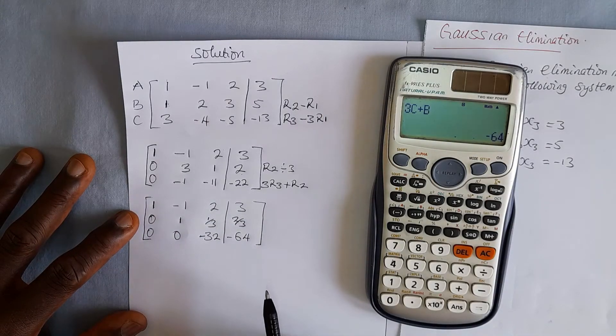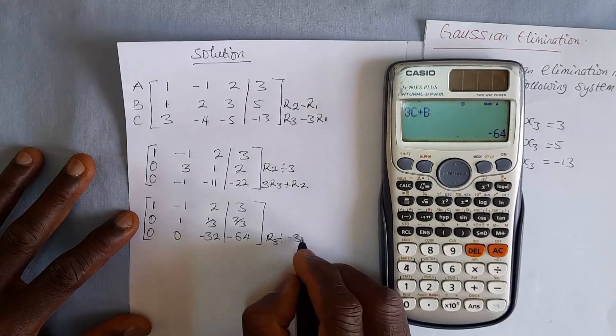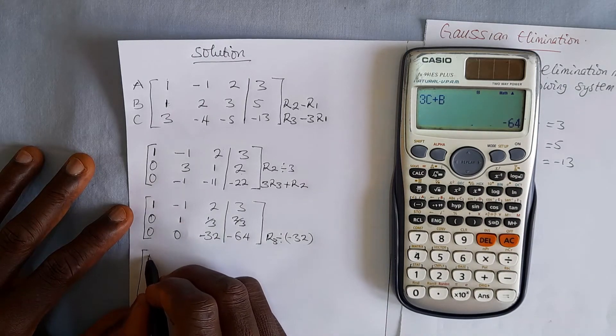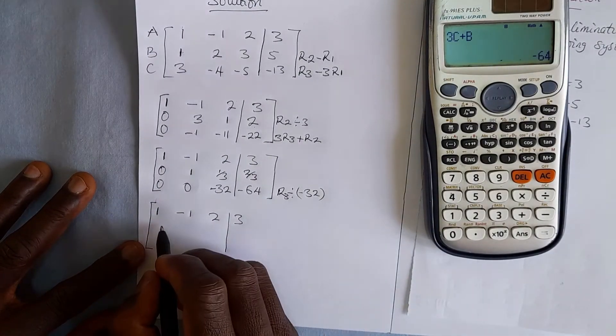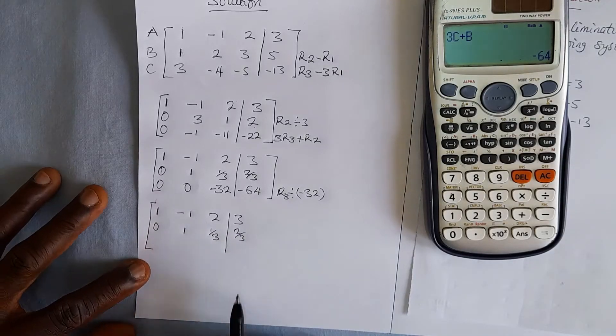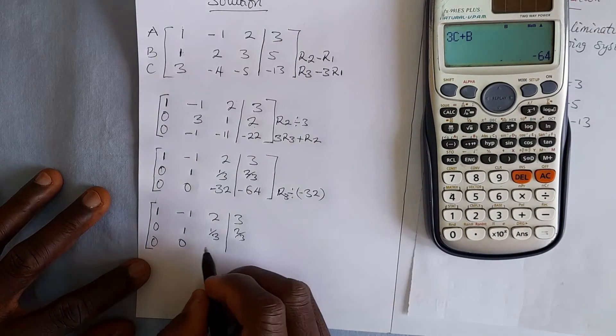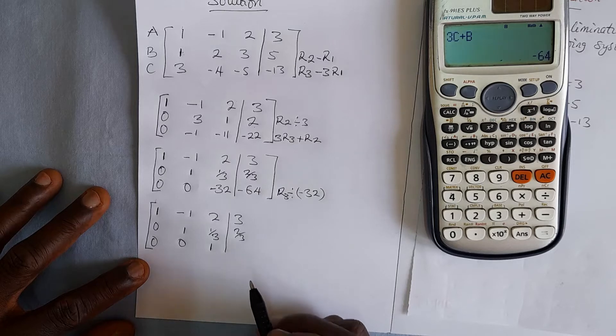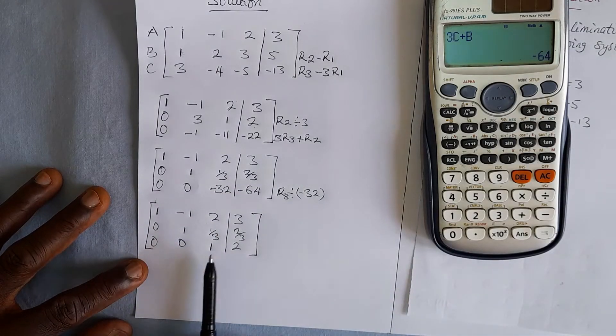We want to make this a 1. That is our next target. So the simple thing we do is we take row 3, we divide by negative 32. And we write our next matrix. For row 1, there is no operation on it, so it maintains the same. 2 and 3. Row 2 also, there was no operation on it. The same thing maintains. 2 over 3. But for row 4, we are going to divide that. We must not use a calculator because we know it is very simple to do. So if we divide this by negative 32, we should have 1. And if we divide this by negative 32, we should have 2. So we know that these have been made into zeros and these into ones.